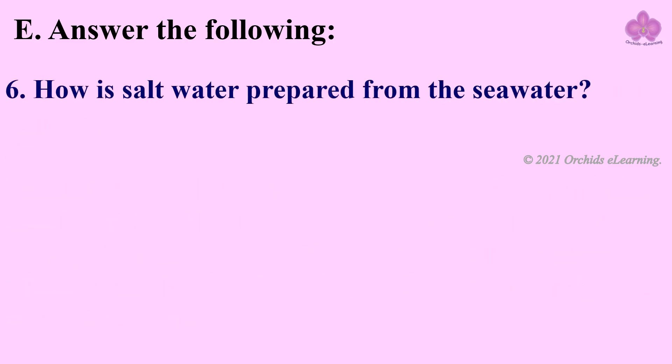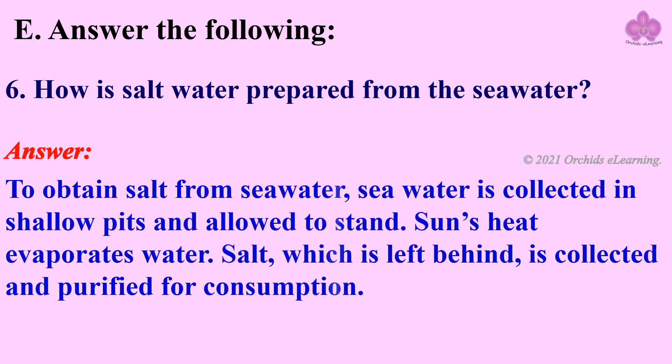How is salt obtained from sea water? Answer: To obtain salt from sea water, sea water is collected in shallow pits and allowed to stand. The sun's heat evaporates the water. The salt, which is left behind, is collected and purified for consumption.